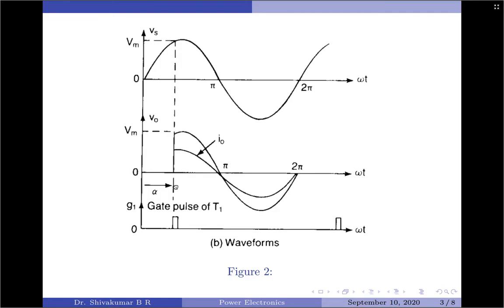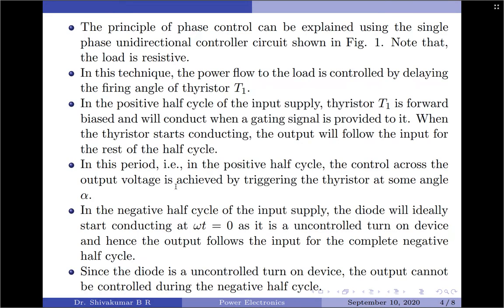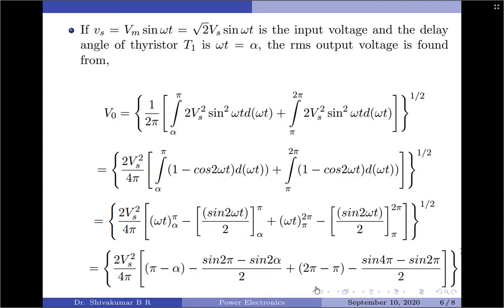Since power flow is controlled only during the positive half cycle of the input voltage, this type of controller is also called a unidirectional controller. Now we will continue to find expressions for the RMS and average values of the output load voltage. If V_s, the supply voltage, is given as V_m sin(ωt) = √2 · V_s · sin(ωt), and the delay angle of thyristor T1 is ωt = α.